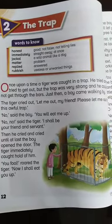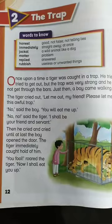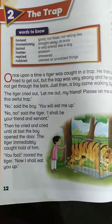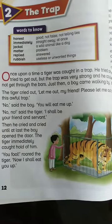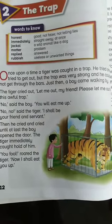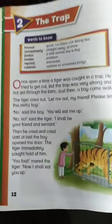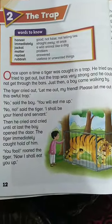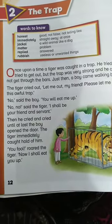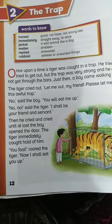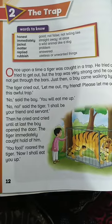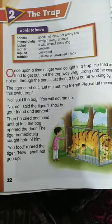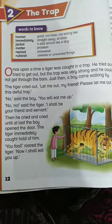The trap is a device which is used to catch animals, or it simply means 'Jaal.' Before starting reading, let me explain the meanings of difficult words. The first word is 'honest,' which means good, not false, or not telling lies — 'imaandar.' The second word is 'immediately,' which means straight away or at once — 'ek dam se.' The next word is 'jackal,' a wild animal like a dog — 'geeder.' The next word is 'matter,' which means problem. 'Replied' means answered, and 'rubbish' means useless or unwanted things — something you throw in a dustbin.